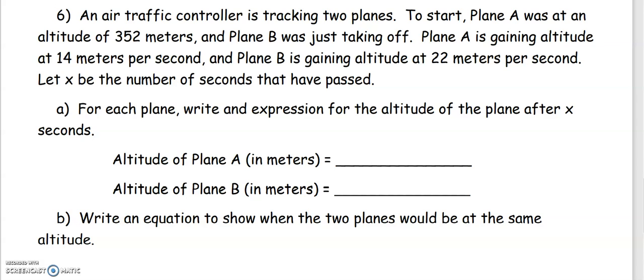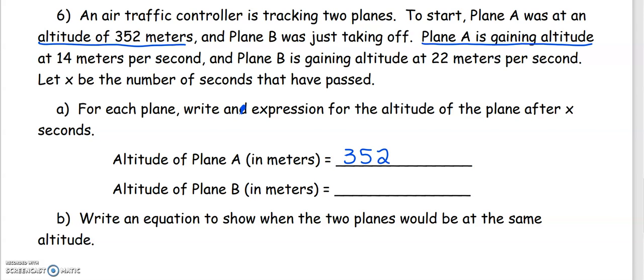For each plane, write an expression for the altitude of the plane after x seconds. Altitude of plane A in meters. Plane A was at an altitude of 352 meters, so that's where plane A is starting from. Plane A is gaining altitude at 14 meters per second. Gaining would be an addition problem: 14 meters, and per second, multiply by the number of seconds.